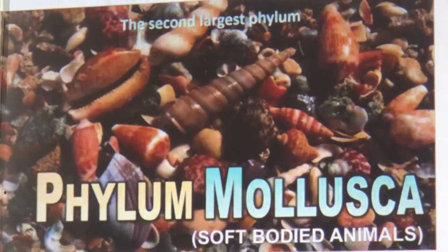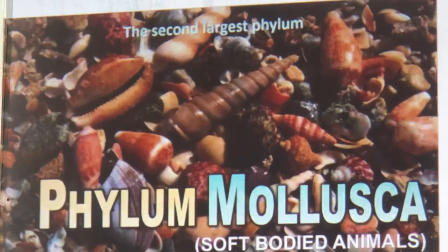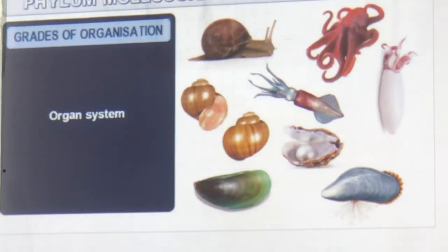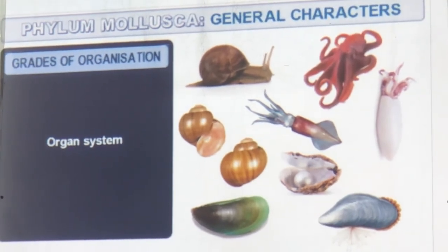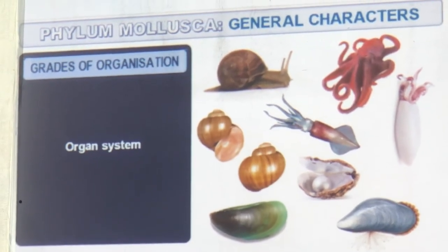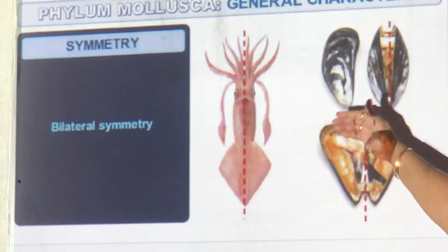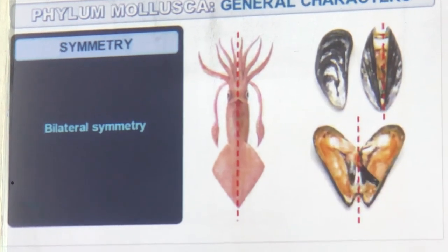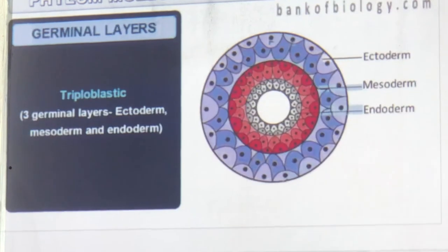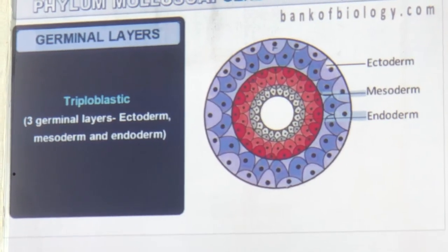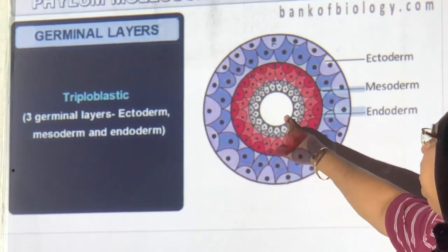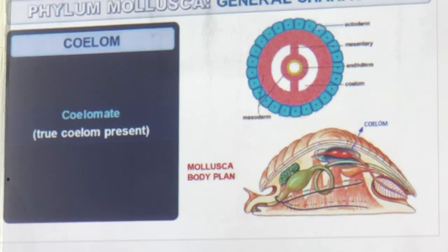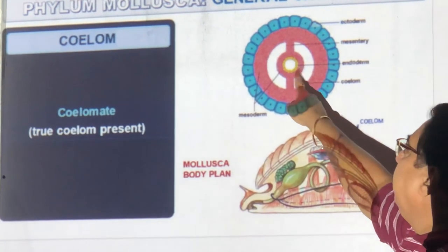Now Mollusca — soft-bodied animals. You can see their soft body coming out. Organ systems are present. Octopus and others are very intelligent. Bilateral symmetry — you can open a shell into two parts. Triploblastic: ectoderm, endoderm, and mesoderm all present. True coelom is present in the embryo — lined by mesoderm on both sides.